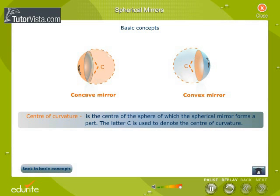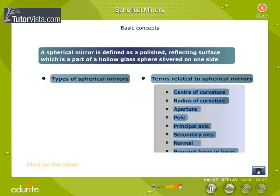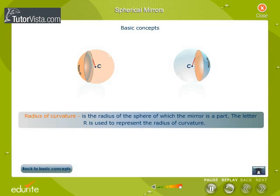Center of curvature is the center of the sphere of which the spherical mirror forms a part. The letter C is used to denote the center of curvature. Radius of curvature is the radius of the sphere of which the mirror is a part. The letter R is used to represent the radius of curvature.